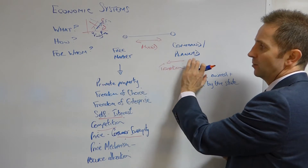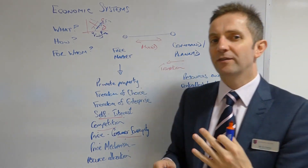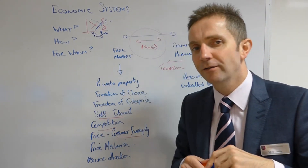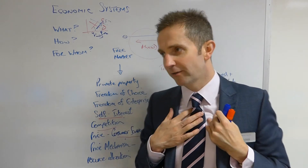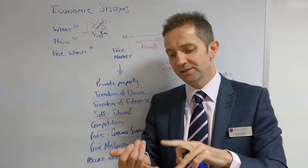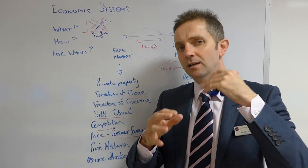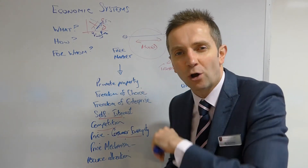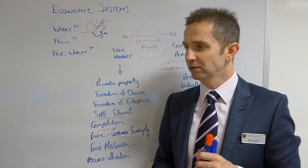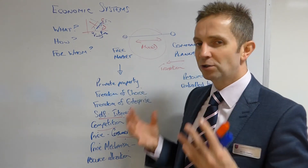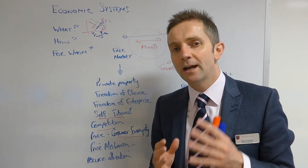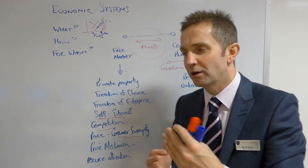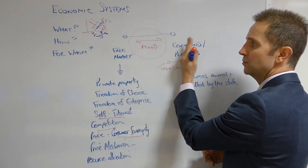Whether or not you are classed as a command or free market economy, there will be very few which are outright on the extremes. Most will be somewhere in between — a combination of state intervention. Think of our own economy: state-provided goods and services such as health, education, defence, and transport. All of these are very hot topics in the election at the moment. The degree of mixing depends upon the degree of government intervention. If you've got a very mixed economy with lots of state intervention, like the French economy, for example, you're moving more towards the command system.